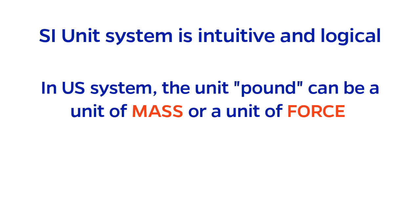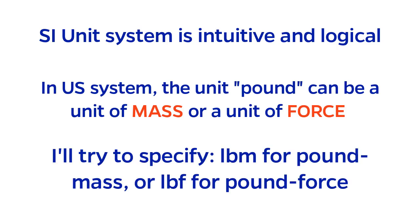In this class, I will try to always specify pound mass symbol LB sub M or pound force symbol LB sub F, and I suggest you do the same to stay organized. Even more confusing still, the pound force is defined as a value of 32.174 pound mass feet per second squared. Coincidentally, the acceleration due to gravity has this same numerical value of 32.174, but different units of feet per second squared.